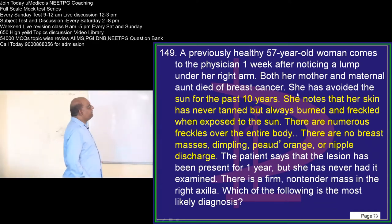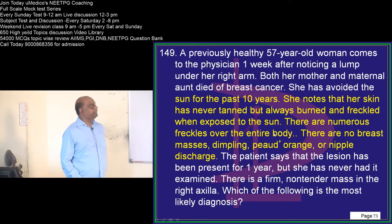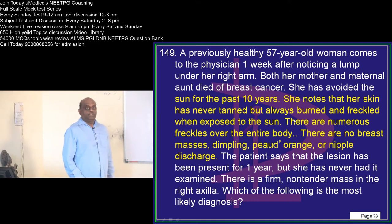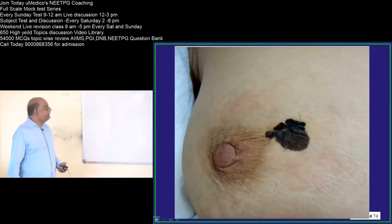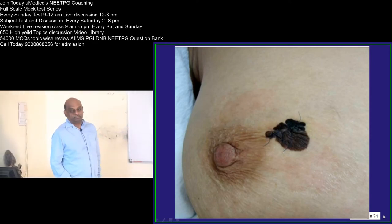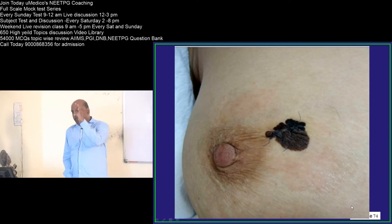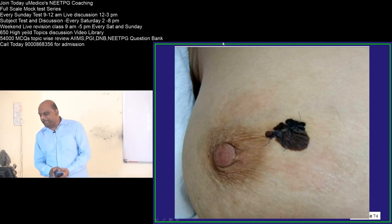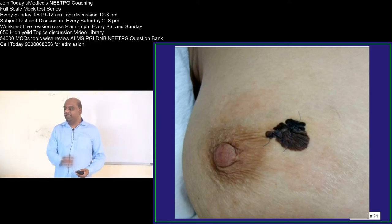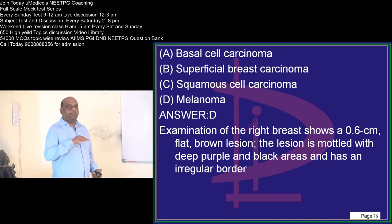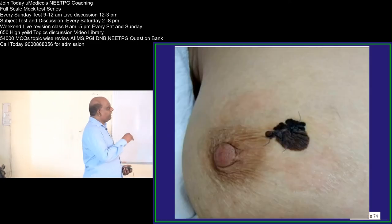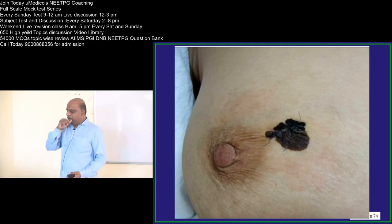A previously healthy 57-year-old woman comes to the physician. She has avoided the sun for the past 10 years. She notes that her skin has never tanned but always burned and freckled when exposed to the sun, and she finds a lesion near her nipple. Looking at the appearance of the lesion, the most likely possibility is melanoma — a flat brown lesion, mottled with deep purple and black areas, with an irregular border, is a classical description of melanoma.